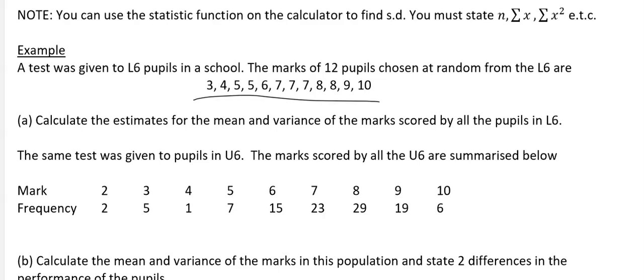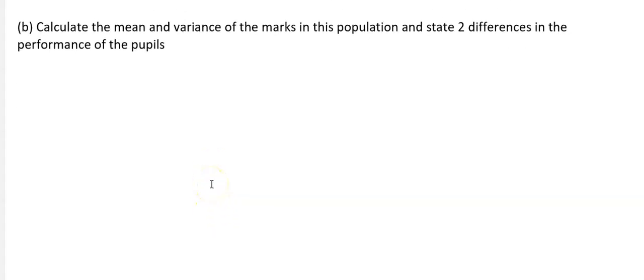On your calculator, first thing you want to do for part A is note this is for the lower sixth. Then go menu and then six, which takes you to the statistics function on the calculator. Then we want to put in the variables.